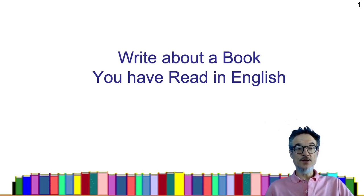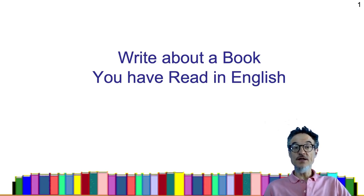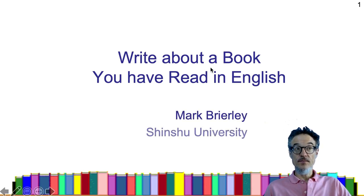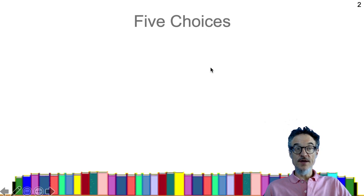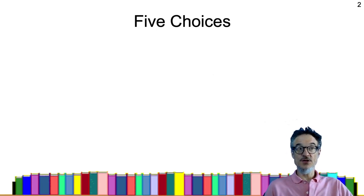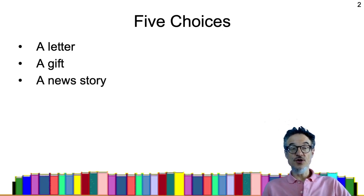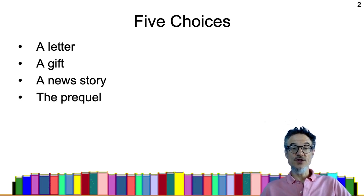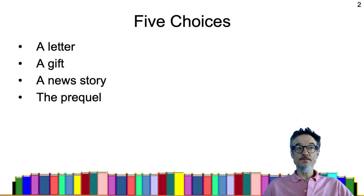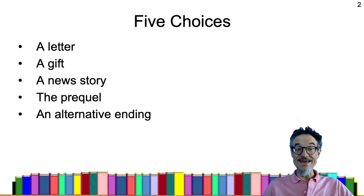I'd like you to write about a book that you have read in English. There are five choices for what exactly you're going to write. One of them is a letter, the next choice is a gift, the next choice is a news story, the next choice is the prequel, and the next choice is an alternative ending. So I'd like you to choose one of these.